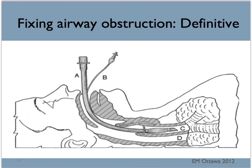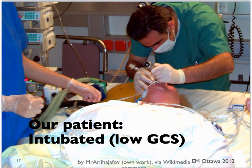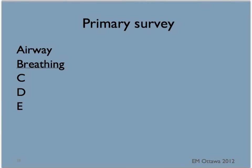However, extraglottic devices do not protect against aspiration. If endotracheal intubation cannot be done due to difficult anatomy, then a cricothyroidotomy is performed to gain access into the trachea through the anterior neck — this is an advanced airway skill and will not be discussed here. Since our patient's GCS is low and his breathing was noisy, we decided to intubate him. After securing the airway, we can then move on to the next step of the primary survey: breathing. Please refer to that video.